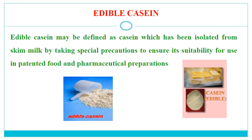Now we will discuss about edible casein. Edible casein may be defined as casein which has been isolated from skim milk by taking special precautions to ensure its suitability for use in patented food and pharmaceutical preparations.